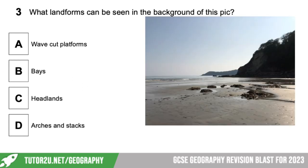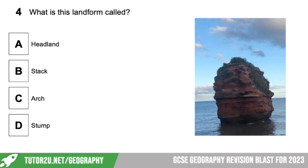Question three: what landforms can be seen in the background of this picture? Is it A — wave cut platforms, B — bays, C — headlands, or D — arches and stacks? It is C: headlands — you can see those stretching out in the background. Question four: what is this landform called? Is it a headland, a stack, an arch, or a stump? It is a stack. At some point it would have been joined to a headland, formed part of an arch which collapsed, and over time it will eventually end up as a stump.